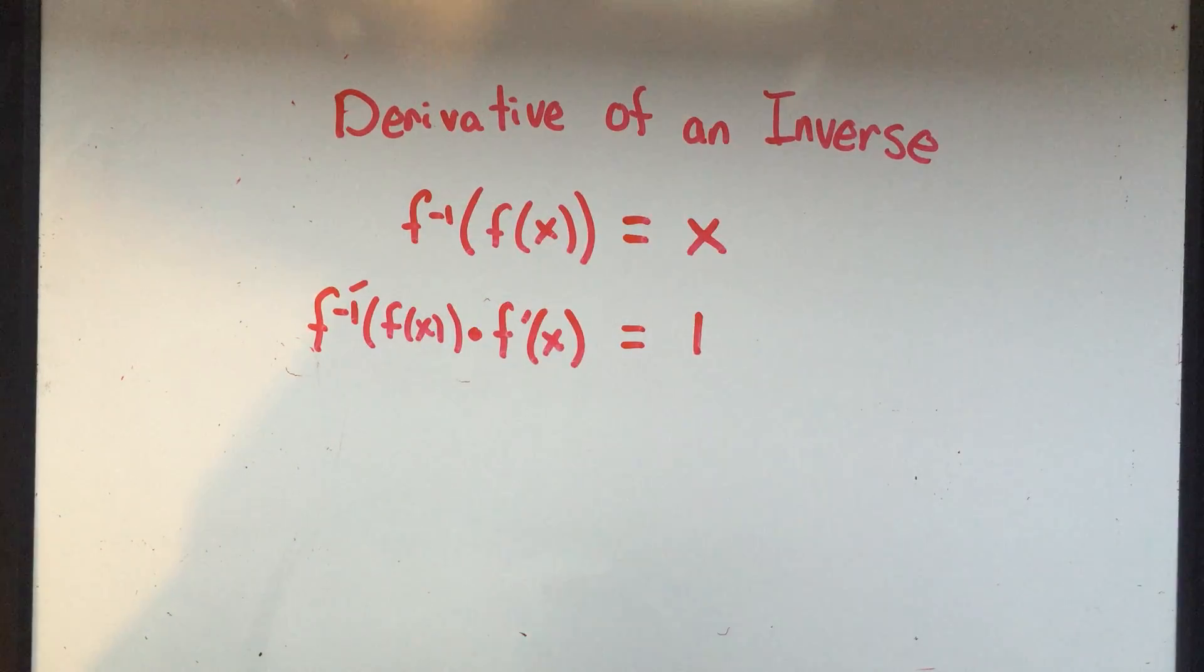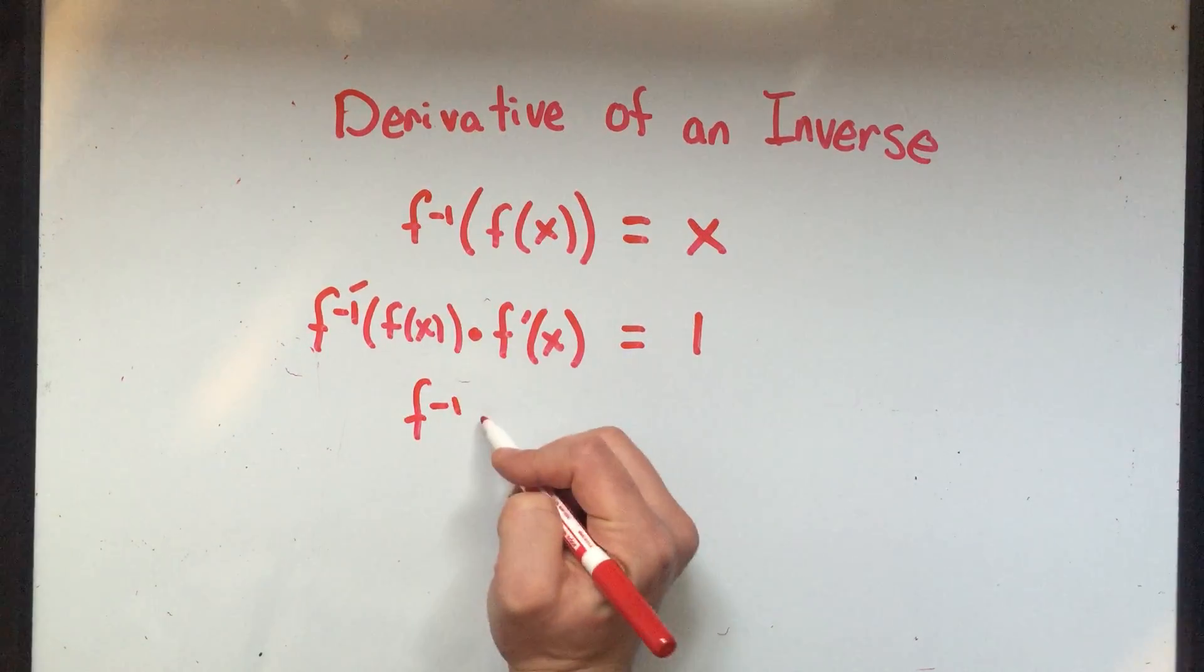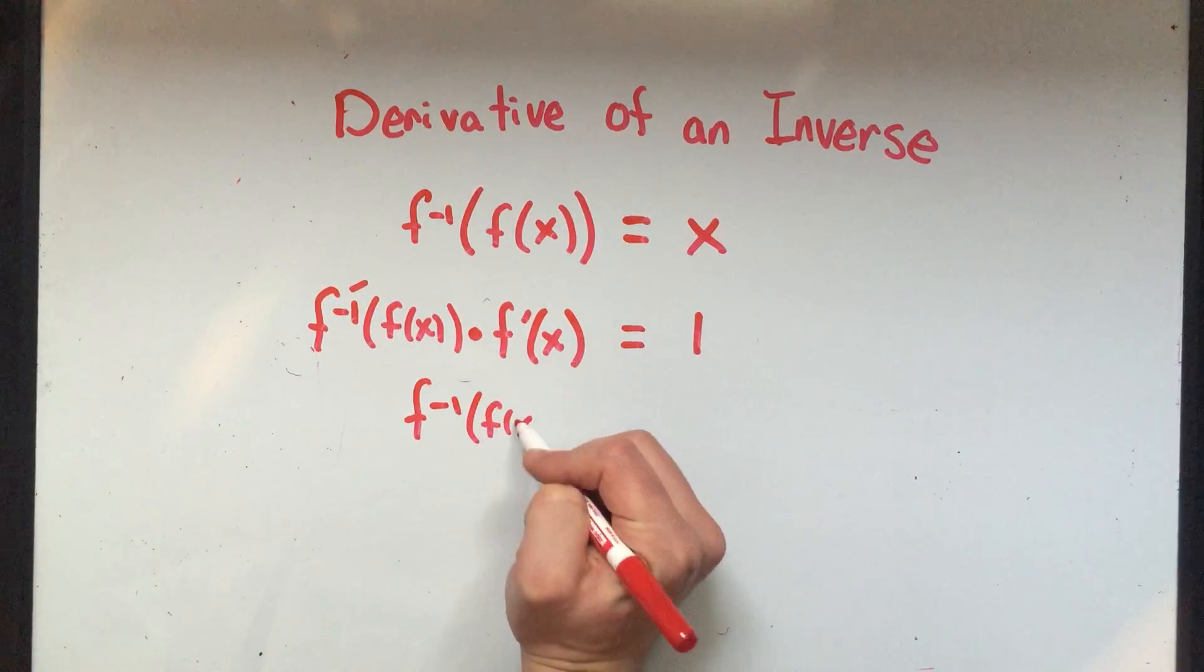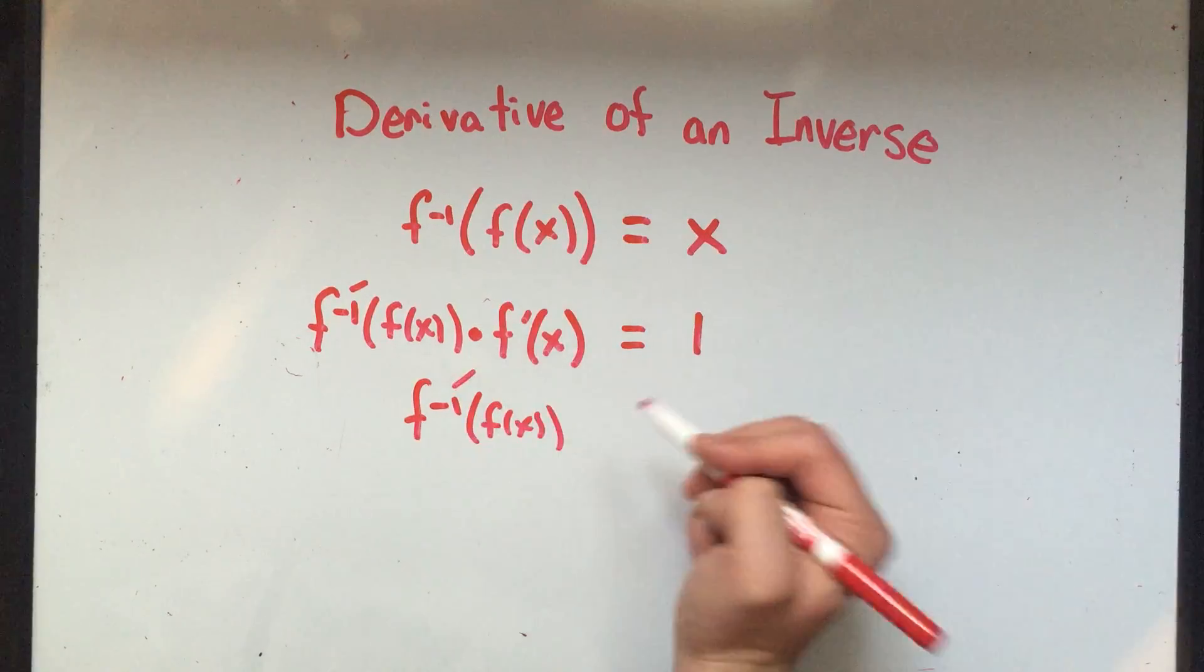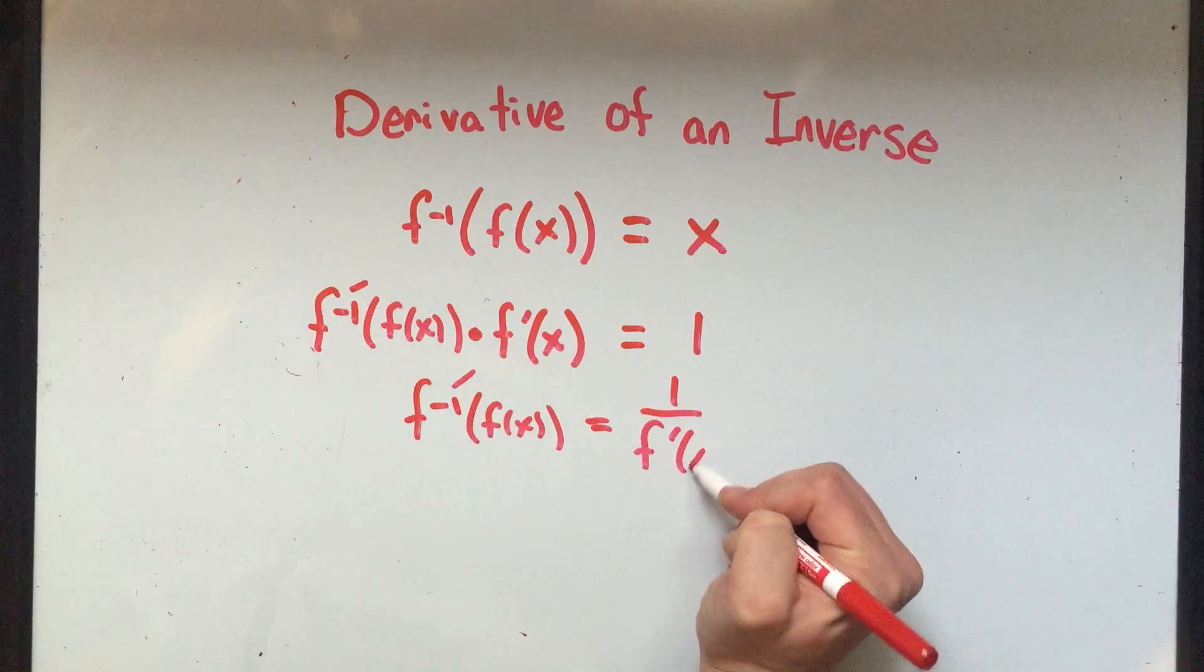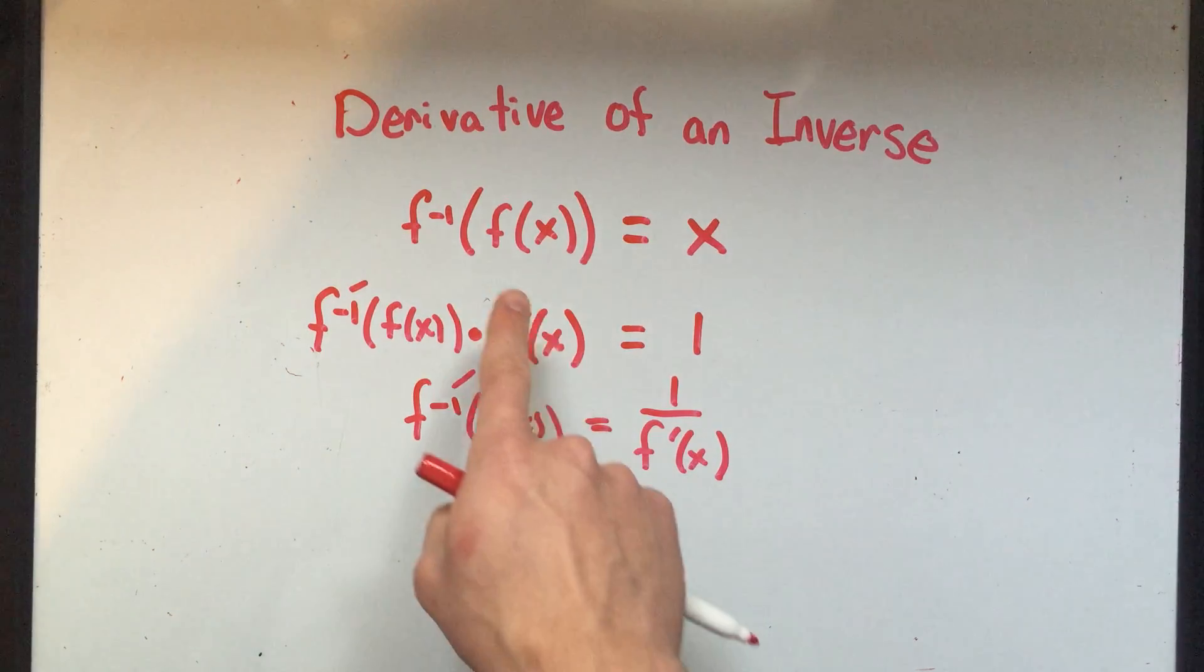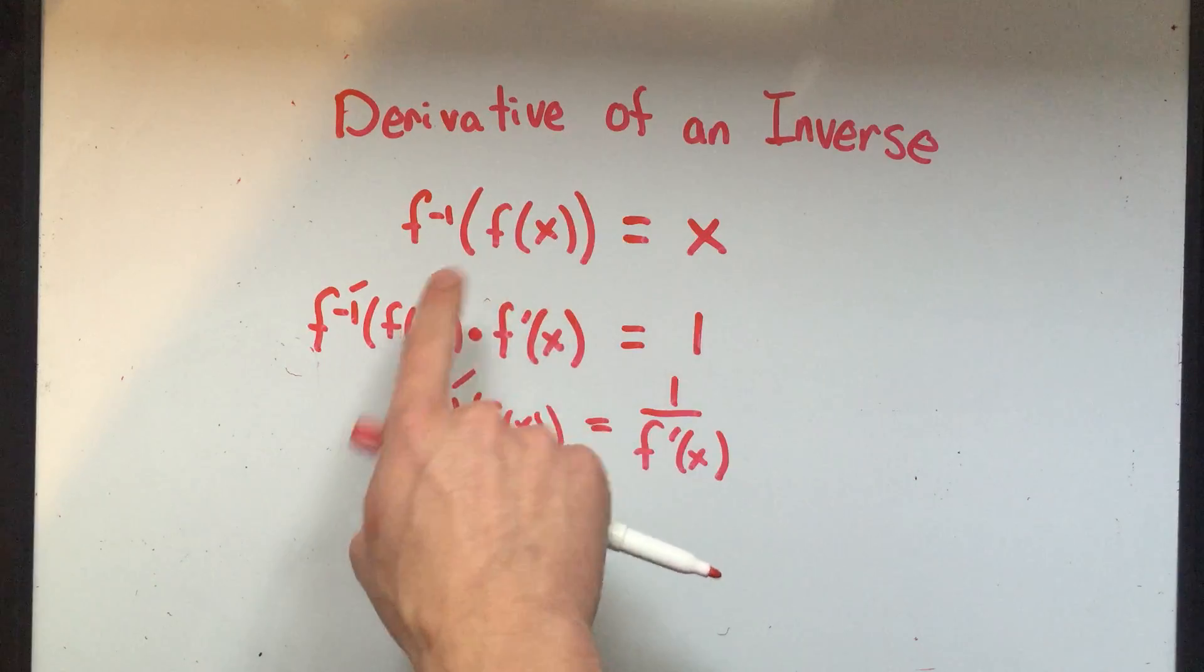What happens if I divide both sides by f prime of x now? That would mean f inverse prime of f of x equals 1 over f prime of x. And now I'm going to do a nice little trick using this same fact.